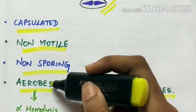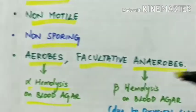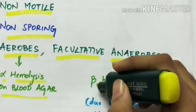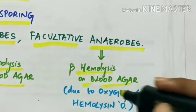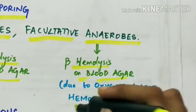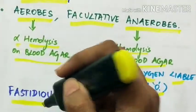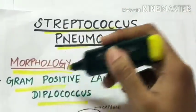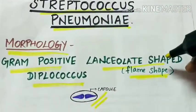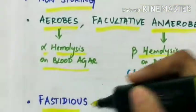In aerobic conditions they produce alpha hemolysis on blood agar and in anaerobic conditions they produce beta hemolysis on blood agar due to the oxygen labile hemolysin O. They are fastidious organisms, that is they grow only in enriched media. Streptococcus pneumoniae is gram positive diplococcus which are lanceolate shaped, encapsulated, and fastidious organisms.